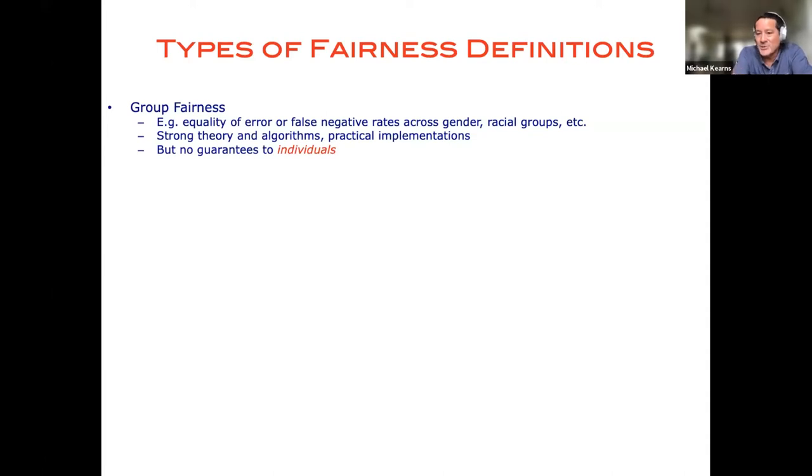The weakness of them, of course, is sort of obvious: they make no promises to individuals whatsoever. They bind at the group level. So, for instance, if you are a black loan applicant who is falsely rejected for a loan, your consolation is supposed to be the knowledge that white loan applicants are being falsely rejected at a similar rate as your racial group.